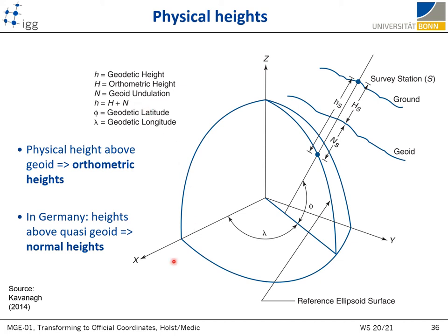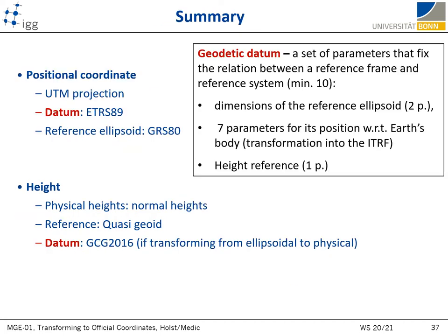In Germany, the official physical heights are slightly differently defined and are called normal heights. They are calculated with respect to the quasi-geoid, which can be determined as the best approximation of the real geoid based on available measurements. To summarize the situation in Germany: official 2D positional coordinates are defined for UTM projection with respect to ITRS89 and the reference ellipsoid GRS-80, while the heights are physical normal heights with respect to the quasi-geoid. The current quasi-geoid model in Germany is GCG 2016, also called the German Combined Quasi-Geoid.